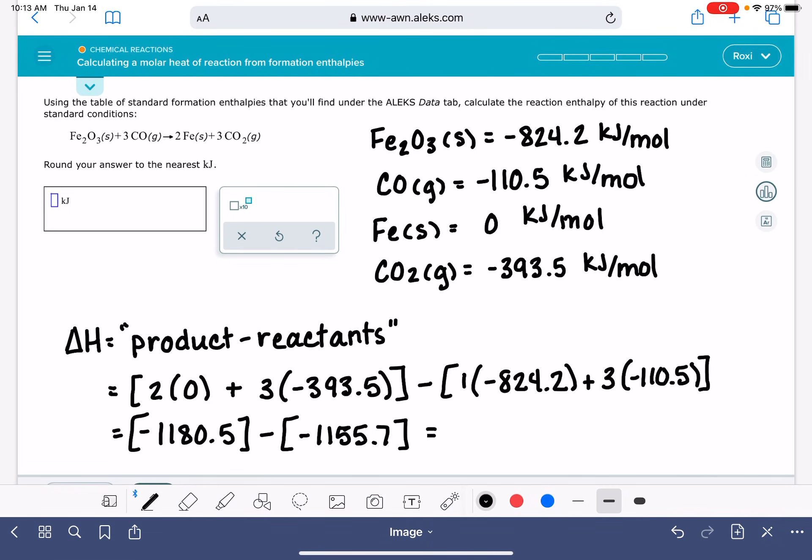Again, we really want to make sure that we're paying attention to the signs here. And if I have done my math correctly, I'm getting a value of negative 24.8 kilojoules per mole. ALEKS wants us to round our answer to the nearest kilojoule. So that means my answer here is going to be negative 25 kilojoules.